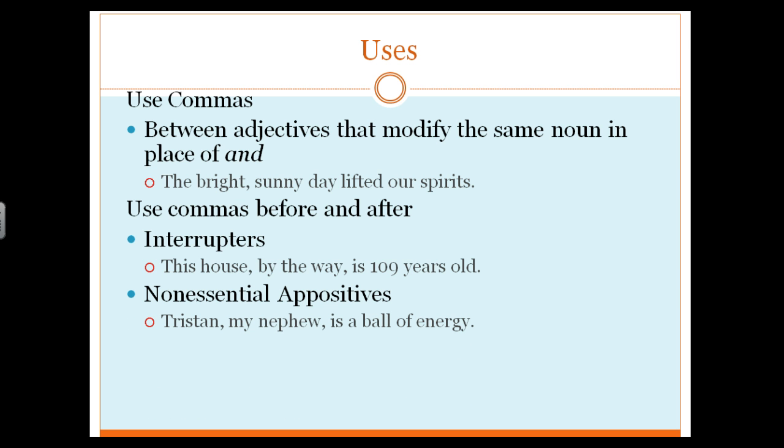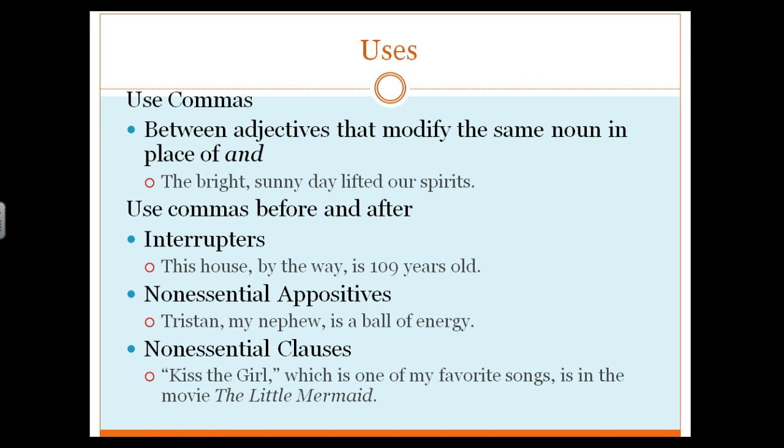Non-essential appositives. Again, phrases that are dropped in. We have commas before and after because we can take them out. Tristan, my nephew, is a ball of energy. An appositive, again, would take the place of saying Tristan is my nephew, period, he is a ball of energy. Non-essential clauses. Kiss the girl, which is one of my favorite songs in the movie The Little Mermaid. Yes, it really is one of my favorite songs. We don't need that clause in the sentence. It's between commas. Kiss the girl in the movie The Little Mermaid would have no commas. Because we have the extra clause in there, we have commas on either side of it.